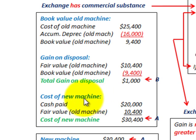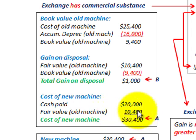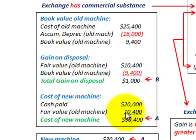Now let's calculate the cost of the new machine. We paid $20,000 cash on this exchange — an extra $20,000 plus the trade-in. Then we take the fair value of the old machine, which was $10,400 — the market value. Adding those two together gives us the cost of the new machine: $30,400.